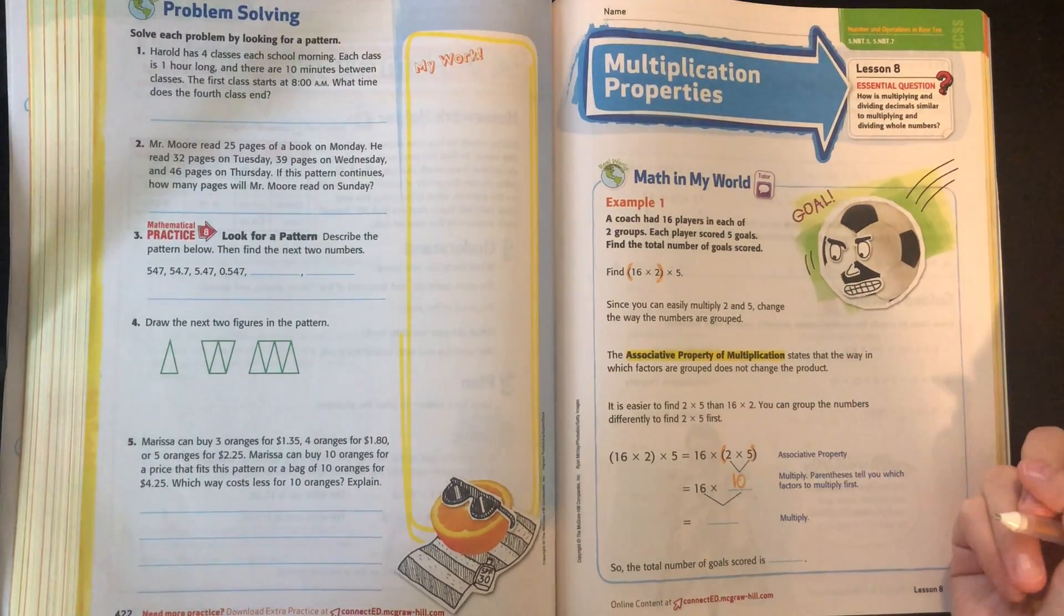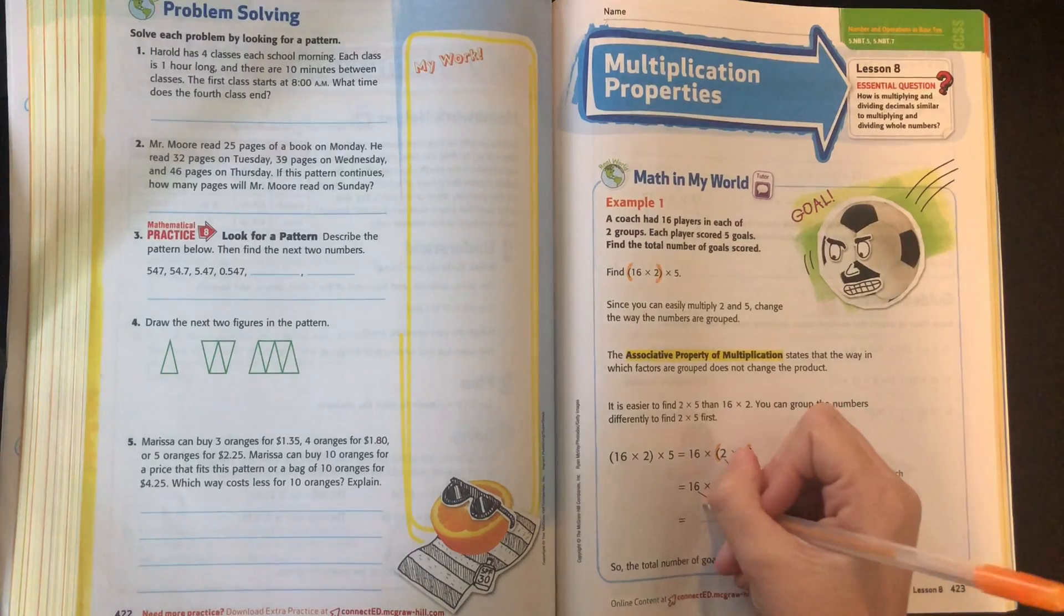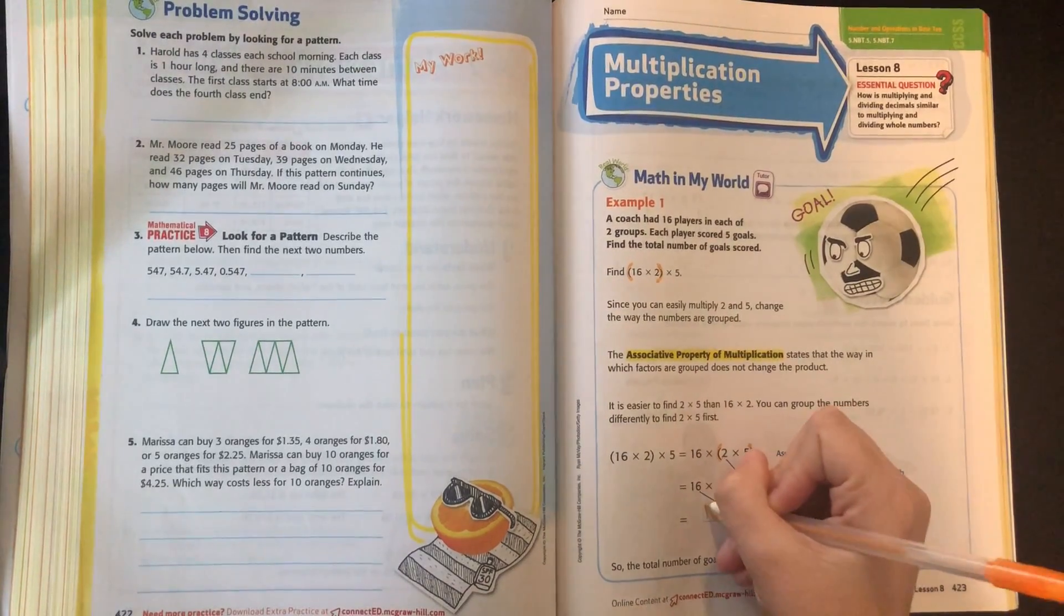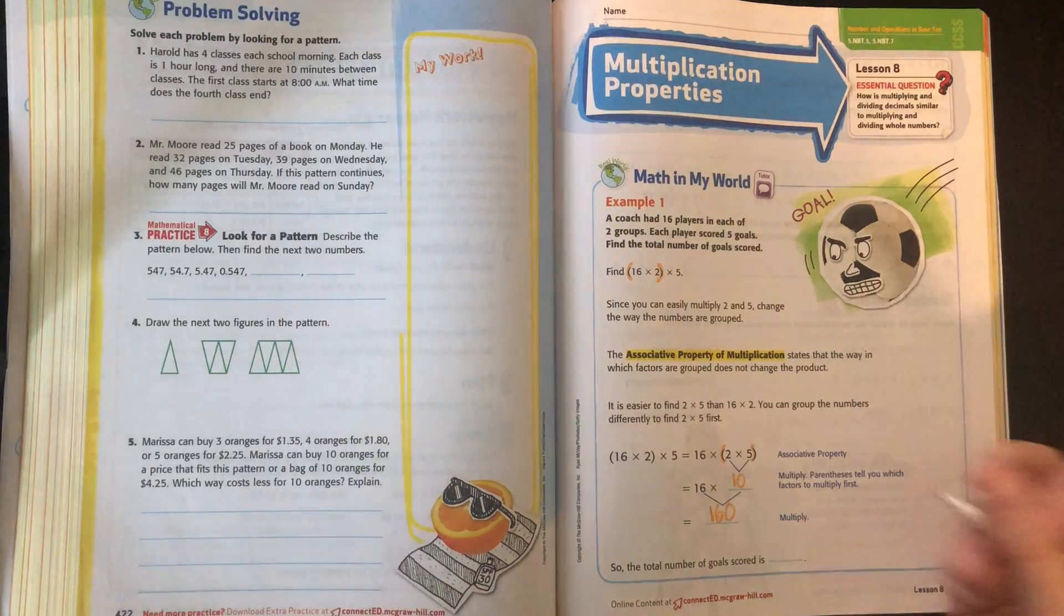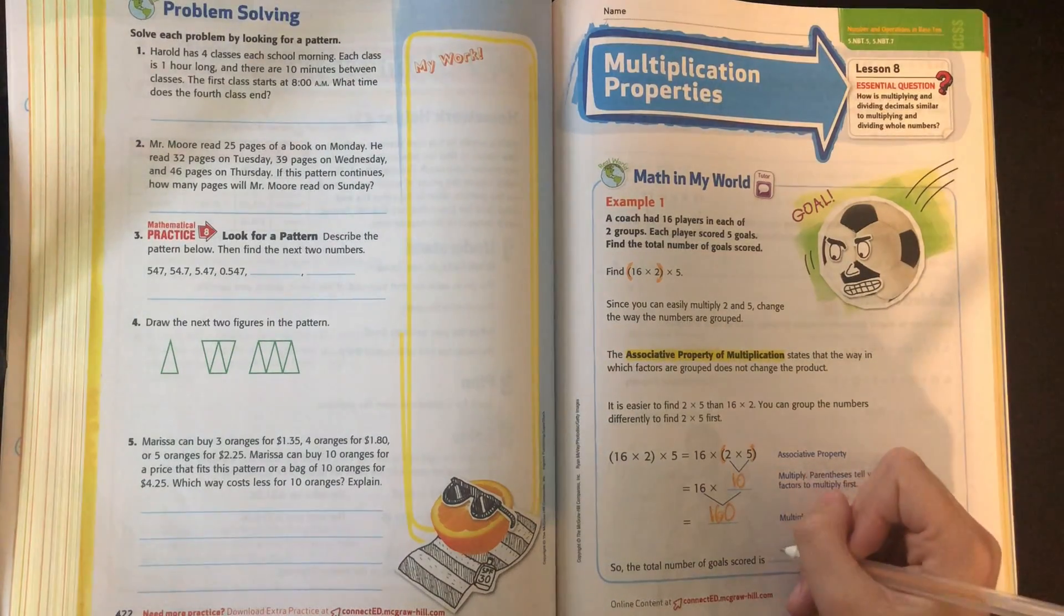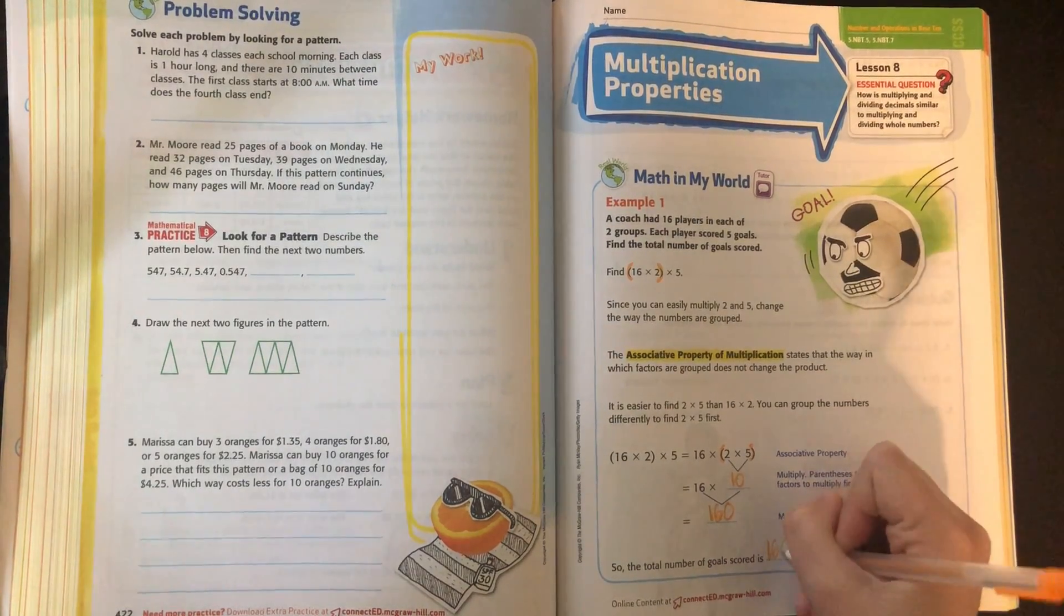And 16 times 10 is a little bit easier for us to multiply, 160. So the total number of goals scored on this soccer team is 160.